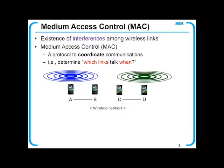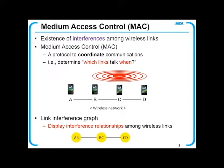Therefore, a protocol is required to coordinate communications. We call it medium access control, or MAC. It determines which links transmit when. To understand MAC protocols, it helps to know the notion of a link interference graph.